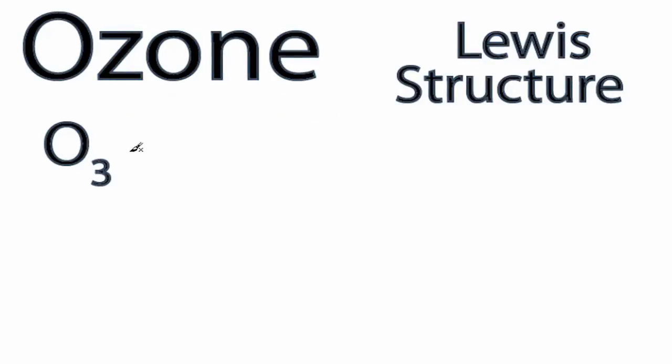For the ozone Lewis structure, we have a total of 18 valence electrons. We have three oxygens, so we'll just line them up like this.